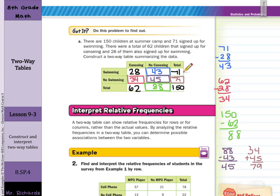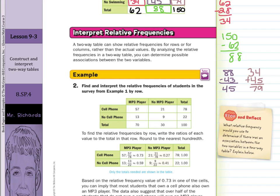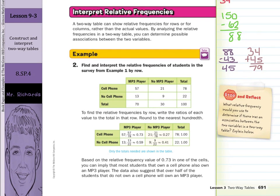Our second part of this lesson is interpret relative frequencies. A two-way table can show relative frequencies for rows or for columns rather than the actual values. By analyzing the relative frequencies in a two-way table, you can determine possible associations between the two variables. In guided example two, find and interpret the relative frequencies of students in the survey from example one by row. Well, what we're going to do then is to take the 57 out of 78 because we're doing this by row.